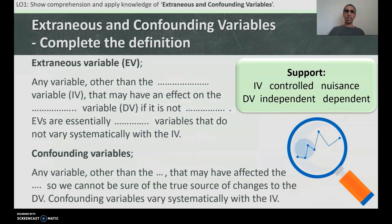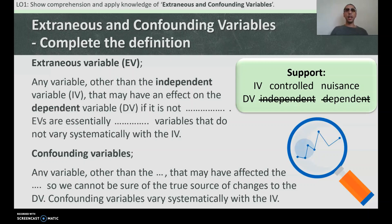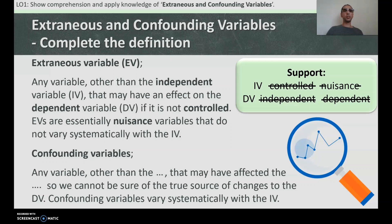Let's define extraneous and confounding variables. An extraneous variable is any variable other than the independent variable that may have an effect on the dependent variable if it is not controlled. EVs are essentially nuisance variables that do not vary systematically with the IV. Confounding variables vary systematically with the IV and therefore we cannot be sure of the true source of the change to the DV.